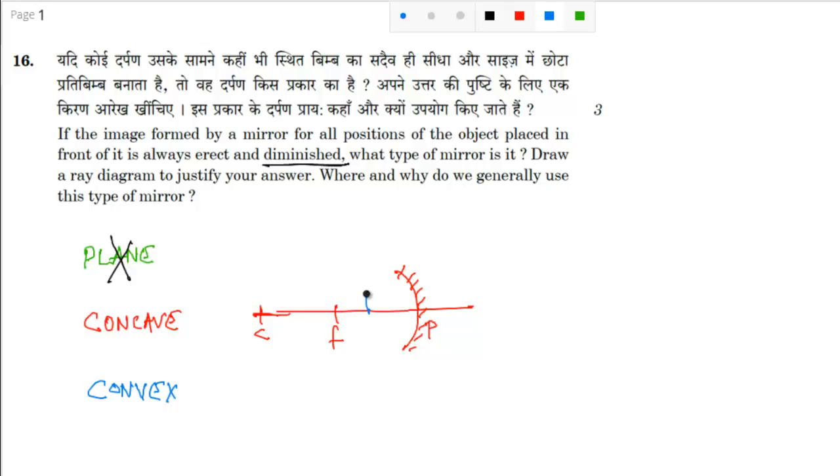When your object is in between focus and pole, in that case the image will form somewhere here. But in that case, you will get an erect image, but that will not be diminished, that will be magnified.